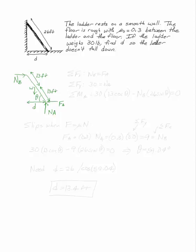I want the ladder to not fall. My sum of the forces in x says Nb equals Fa. Sum of the forces in y says 30 equals Na. And the sum of the moments at, say, point A, since I have two forces there, 30 acts at a distance of 13 cosine theta minus Nb, which acts at a distance of 26 times sine theta. Those have to balance.